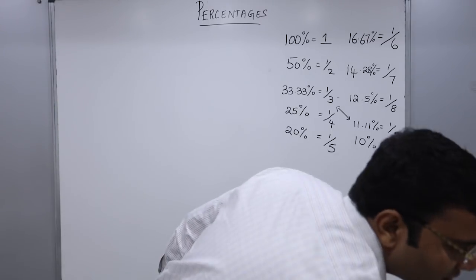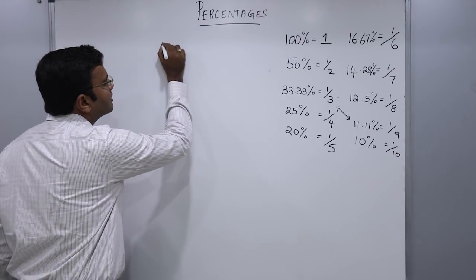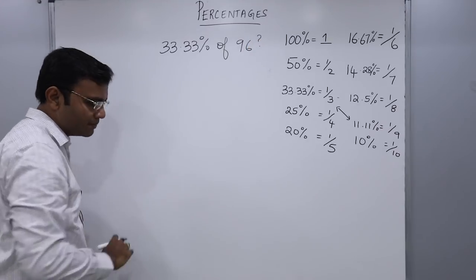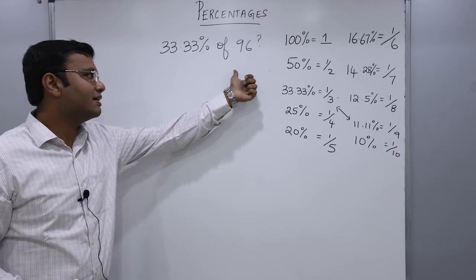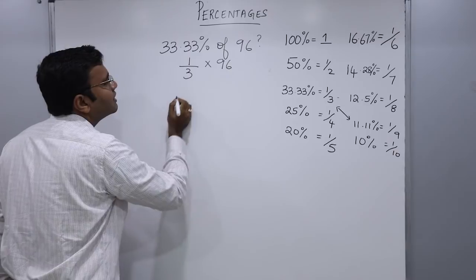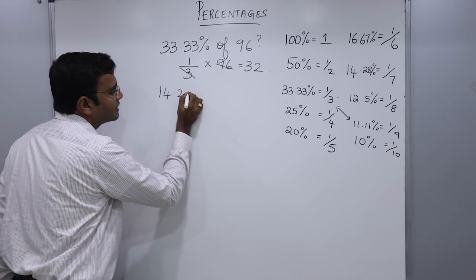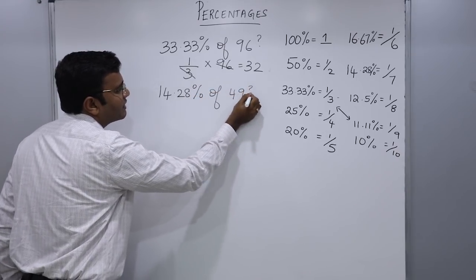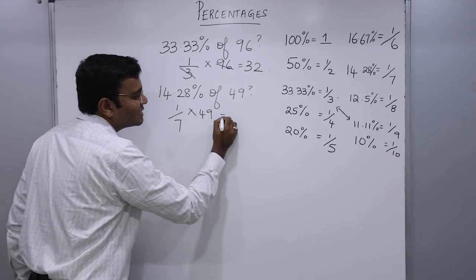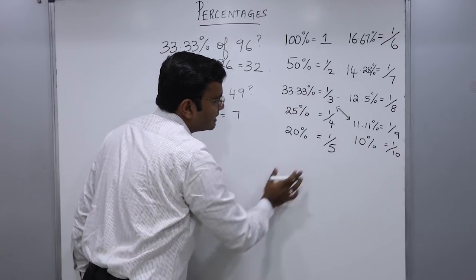What is 33.33 percent of 96? Normally we'd use a calculator: 33.33 times 96 divided by 100. But the easiest way is: since 33.33% is 1 by 3, we take 1 by 3 times 96. 3 goes into 96 exactly 32 times, so the answer is 32. Similarly, 14.28 percent of 49: since 14.28% is 1 by 7, it's 1 by 7 times 49. 7 goes 7 times, giving 7. This saves a lot of time.